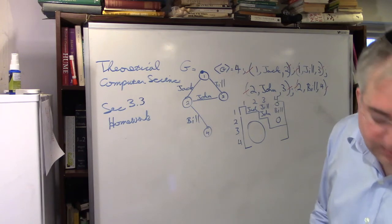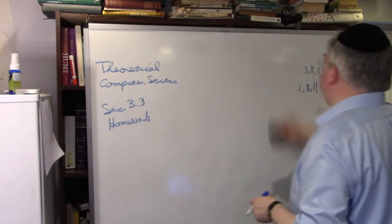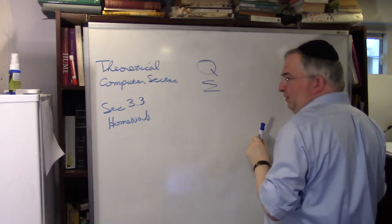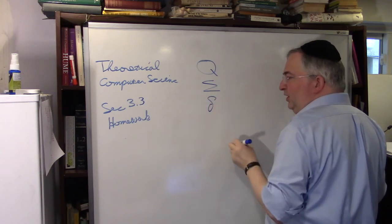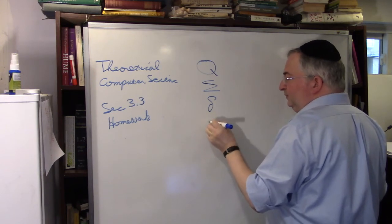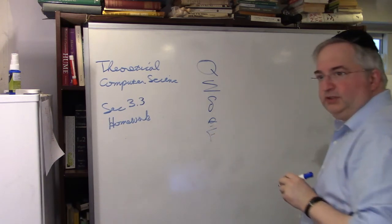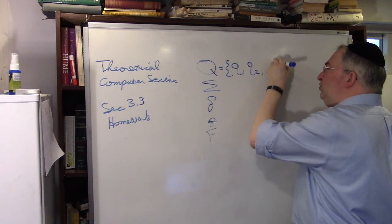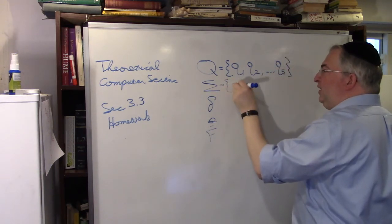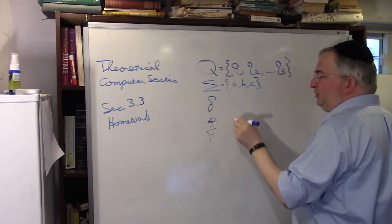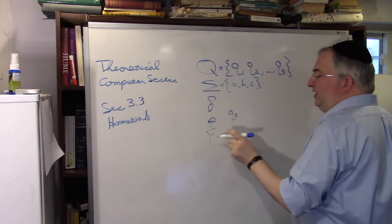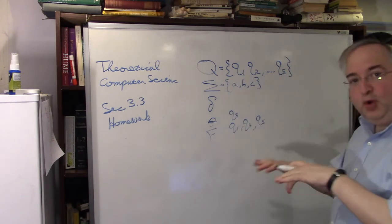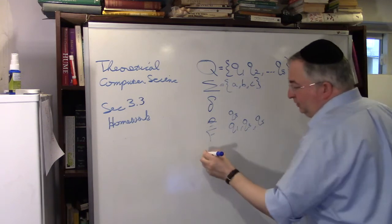That takes me to the third problem. Give a nice way to encode an NFA. Let's just remember the definition of an NFA. You have a set of states, the alphabet, the transition function, the starting state, and the accepting final states.